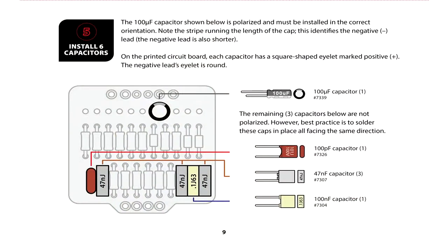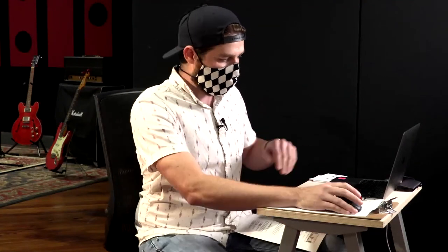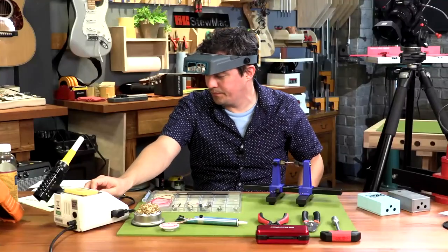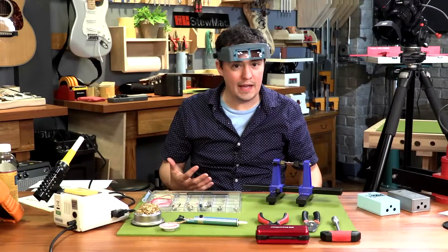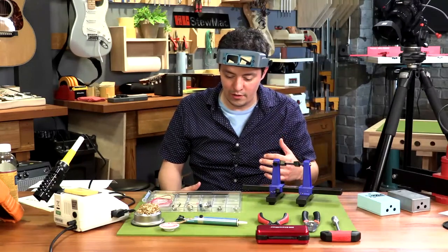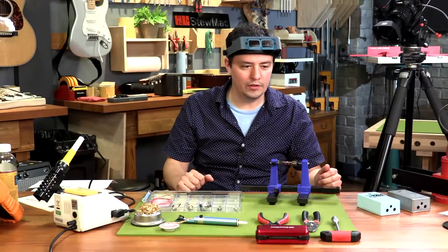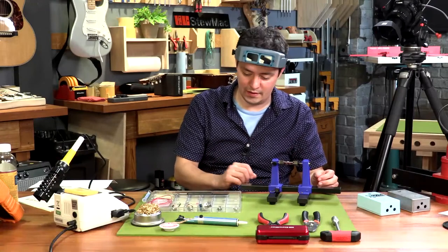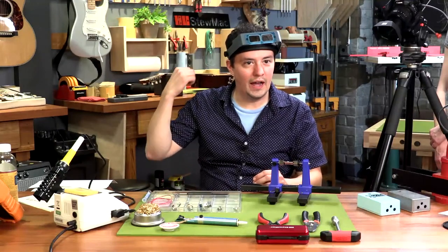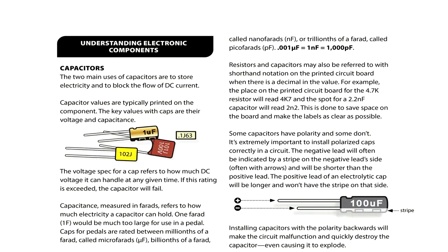We ended with step four last week, starting on step five tonight on page nine in the instructions. We're in step five now, going to install six capacitors. Capacitors are found in almost every audio circuit. They control voltage, filter frequencies, and are a vital component in projects like this.